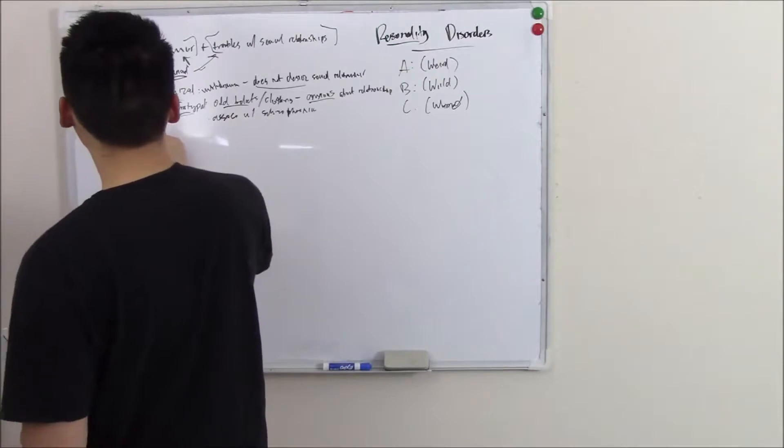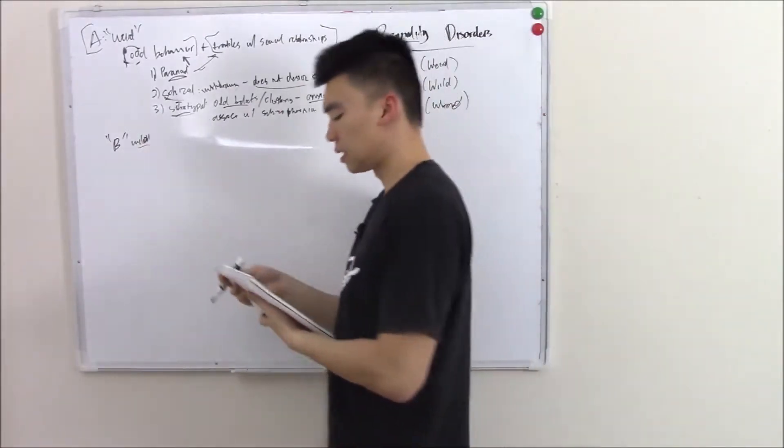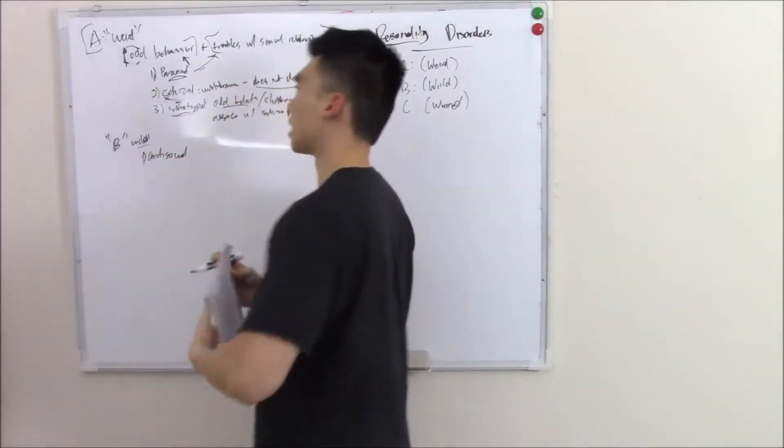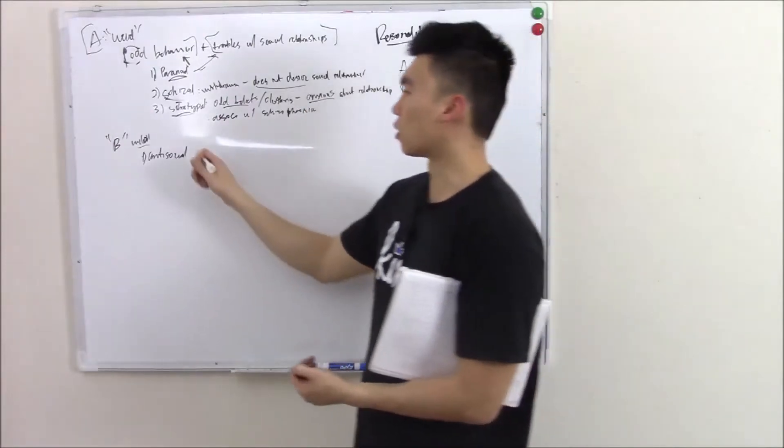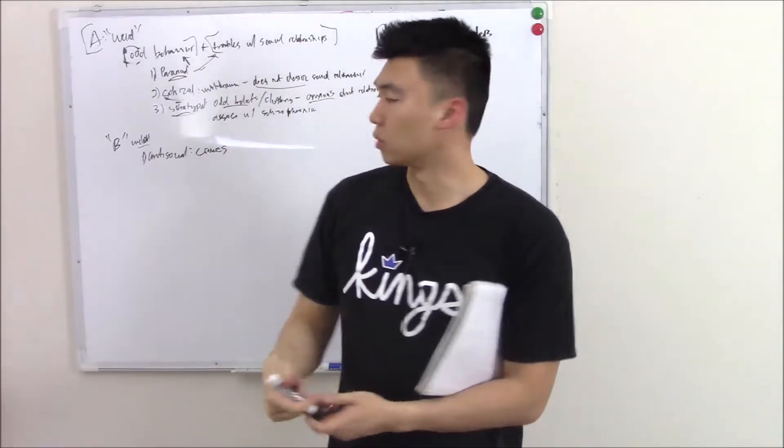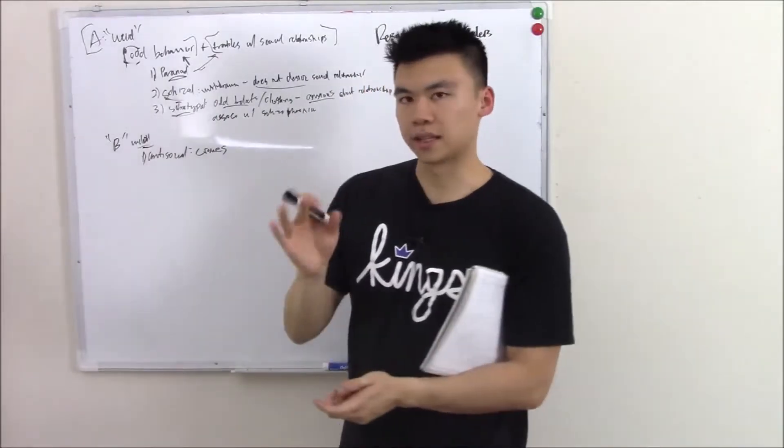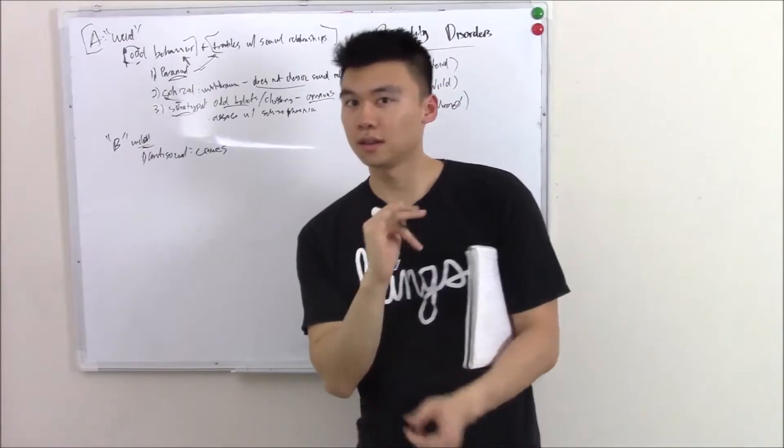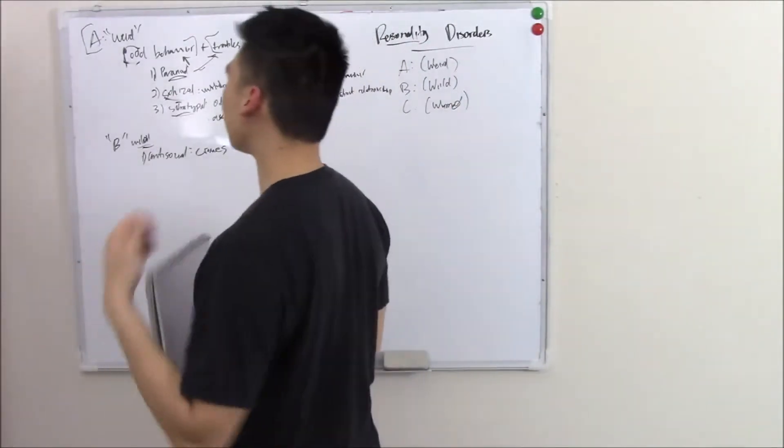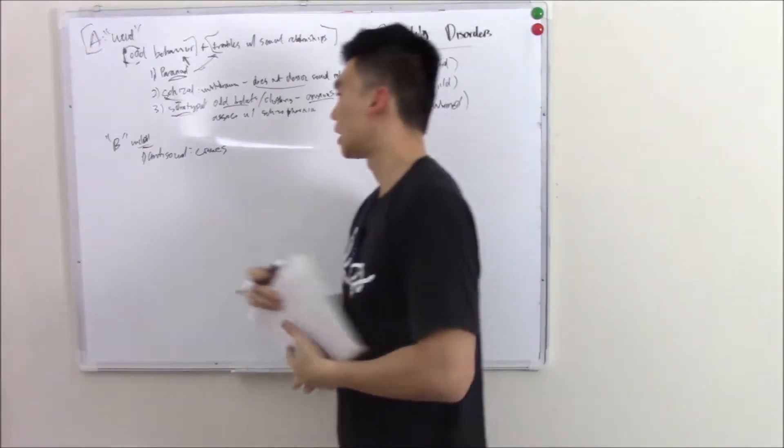B is going to be your wild people that exhibit lack of impulse control or destructive behavior. Antisocial is our first one. Antisocial we talked about when we're talking about childhood development. Antisocial is just a criminal more or less. Someone that commits crimes so they don't have really much regard to other people. That's that wild destructive behavior. That's 18 and older. 18 and younger is called conduct disorder. Very important that you make that distinction between 18 and under and 18 and over.